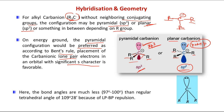For a standard sp3 configuration the bond angle is 109°28', but for an alkyl carbanion the bond angle is in the range 97 to 100 degrees. This is because of lone pair–bond pair (LP-BP) repulsion between the lone pair and the bonding pairs, which compresses the bond angle well below 109 degrees.